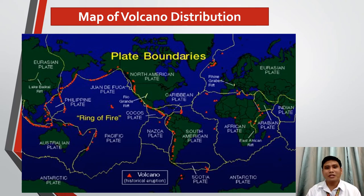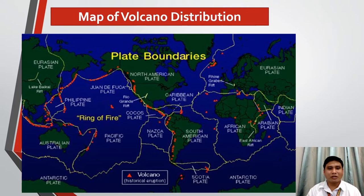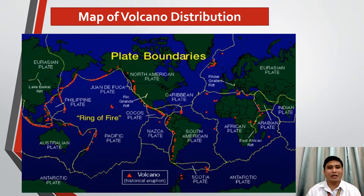In this next picture is the map of volcano distribution. It shows us the volcanoes present all over the world. Volcanoes are represented by very small red triangles. As you can see, between this picture and the first one, they show similarities — wherever there are earthquakes, there are also volcanic activities. Volcanic activities in this picture also create line patterns, just like the earthquakes on the first picture.